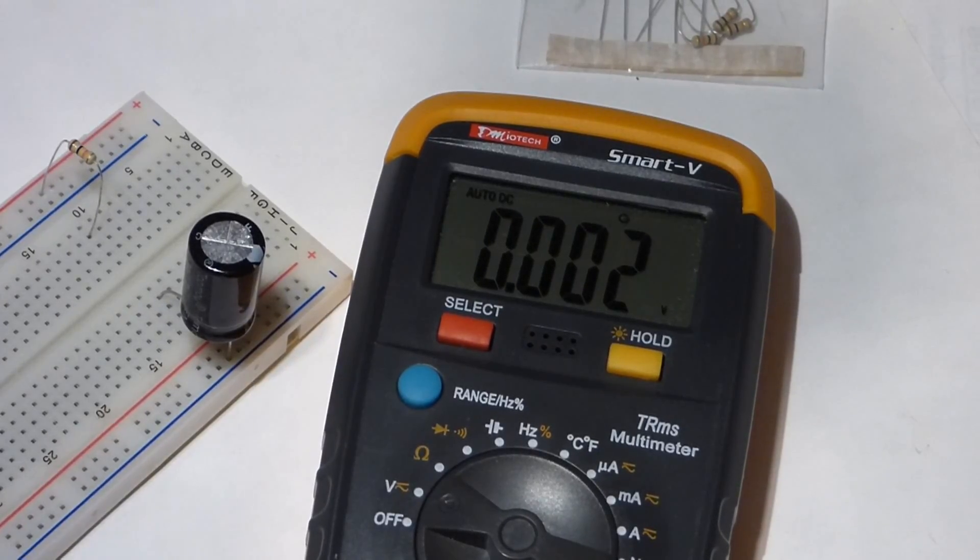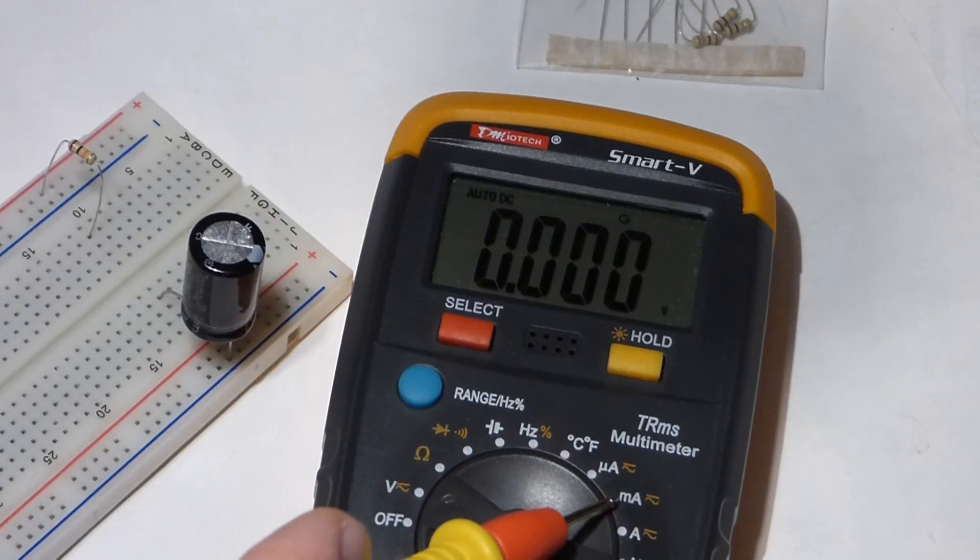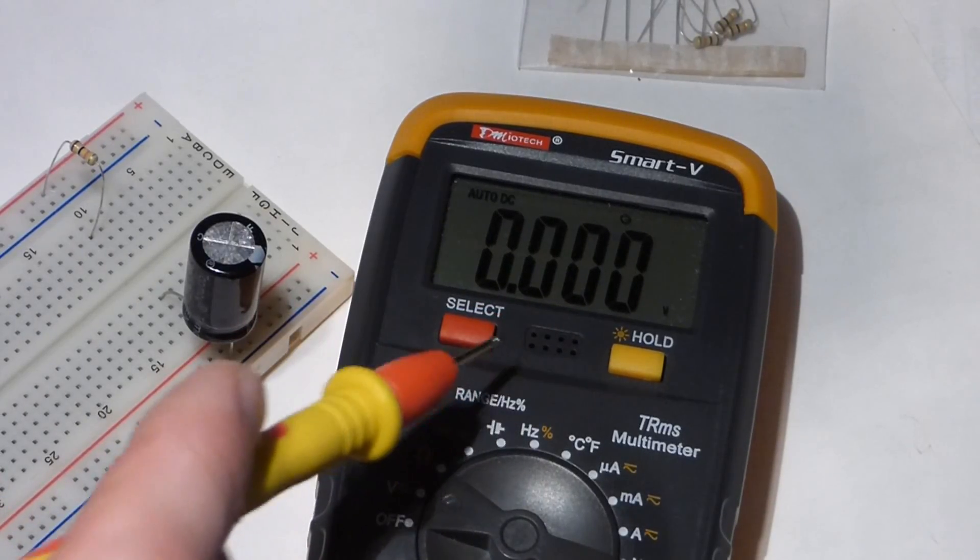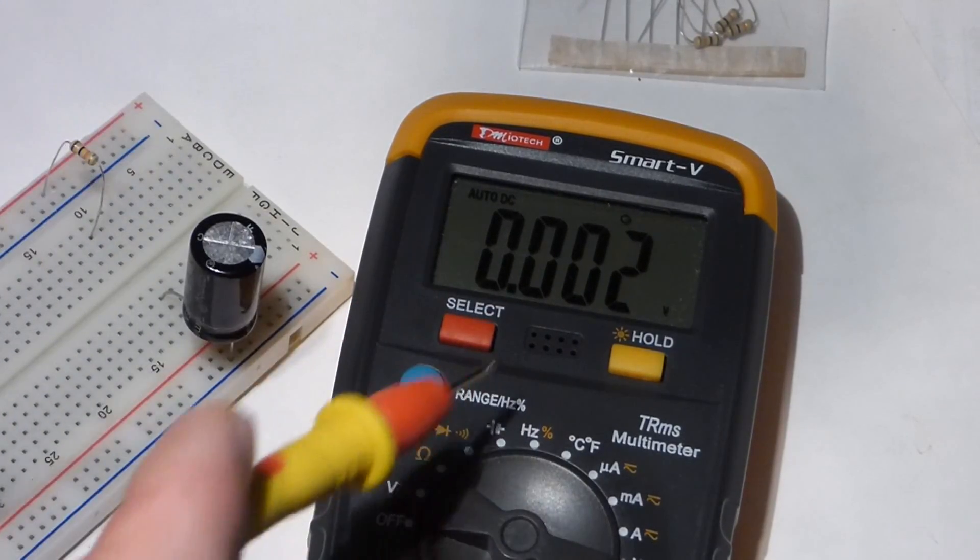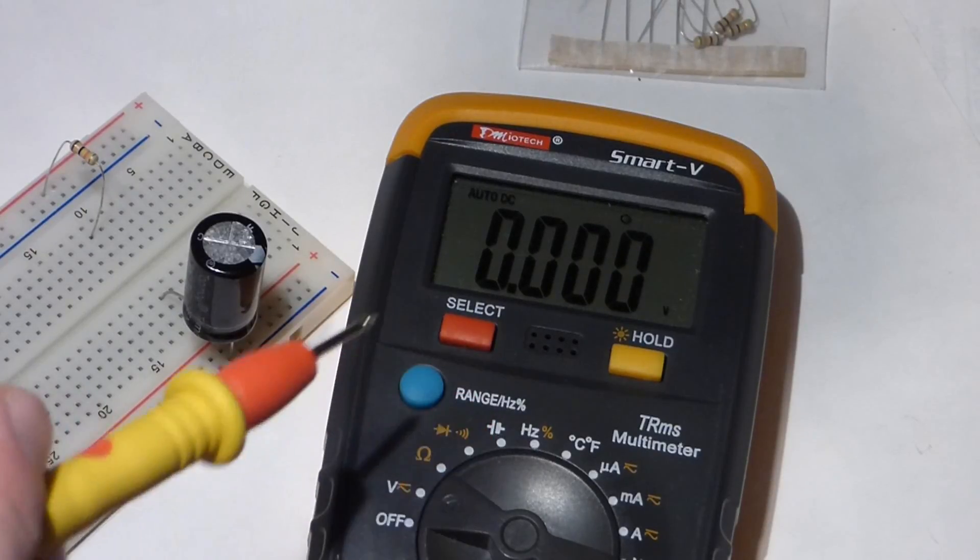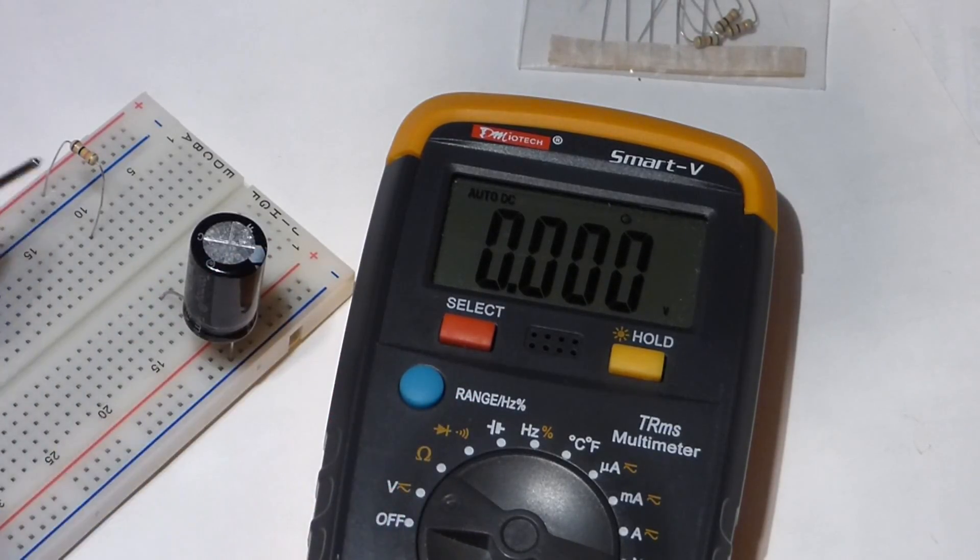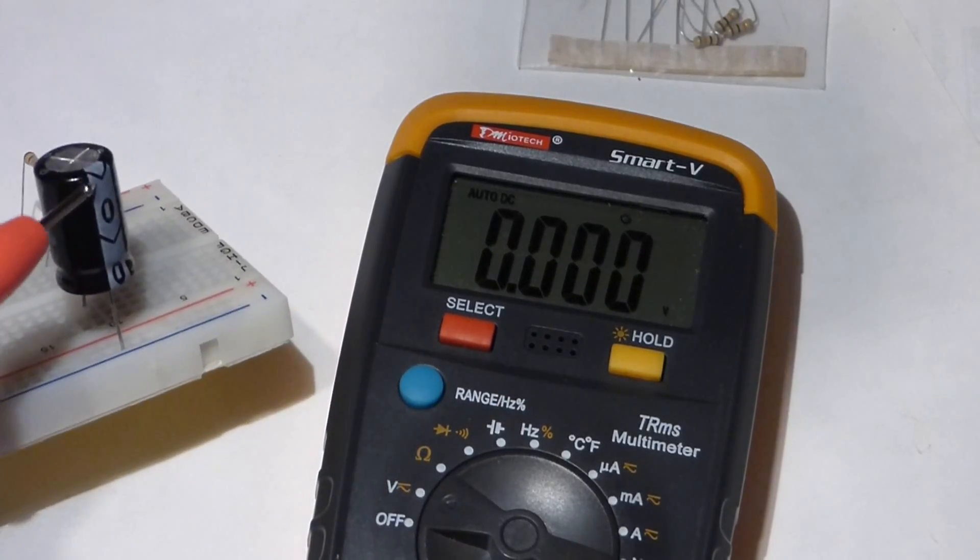So now I just want to do a few reminders. These are just basic things. When you're measuring current, you don't want the meter connected directly to the battery. They're not made to do that. They're made to measure lower amounts of current, so you need some resistance to protect the meter.